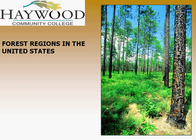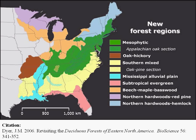This micro-lecture briefly covers some of the major forest regions in the United States. If you look at a map of the eastern U.S., scientists have broken down the eastern forests into several regions. One of the main ones, especially here in western North Carolina, is the mixed mesophytic forest, which represents one of the most biologically diverse temperate regions of the world.